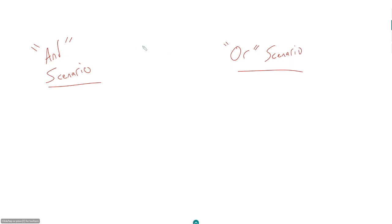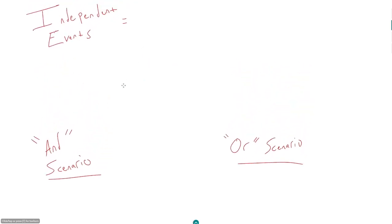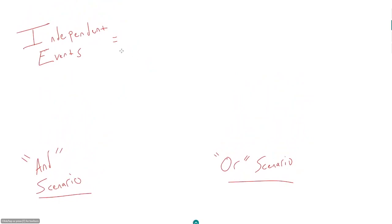Before we talk about either of those, I should preface everything for this video and the remainder of this video series: for all of the questions we are going to do, we are going to assume that we have independent events, because overwhelmingly those are the type of probability questions the GMAT will ask. I've only seen one question that gave a scenario without independent events, and that is an entirely different ball game.